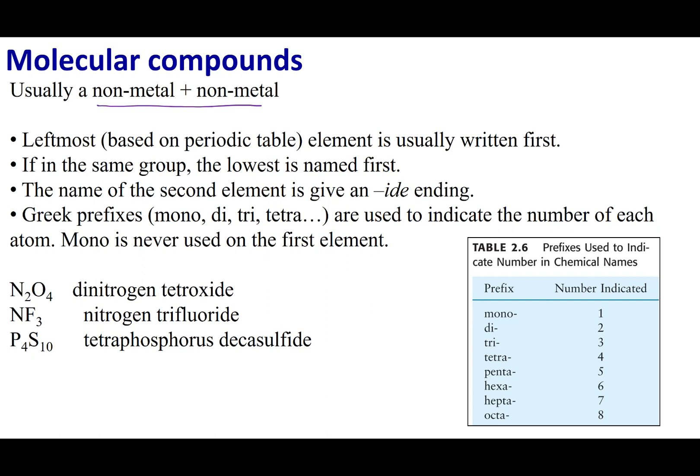So how a non-metal and a non-metal come together is they're going to share electrons, called a covalent bond. We're going to be talking about this bonding a little bit later down the quarter. But for now when you see two non-metals come together, you can say it's a molecular or covalent compound.